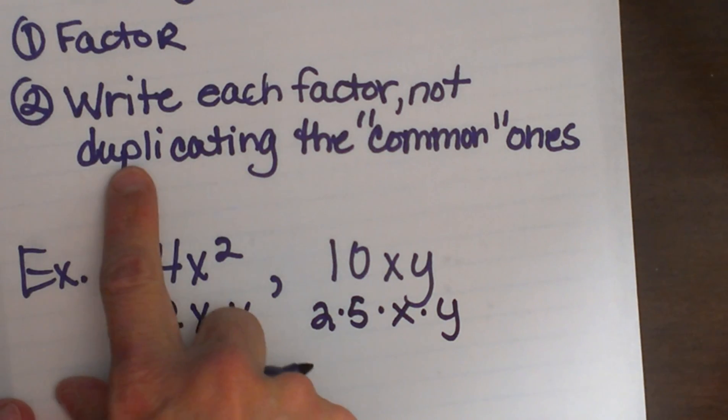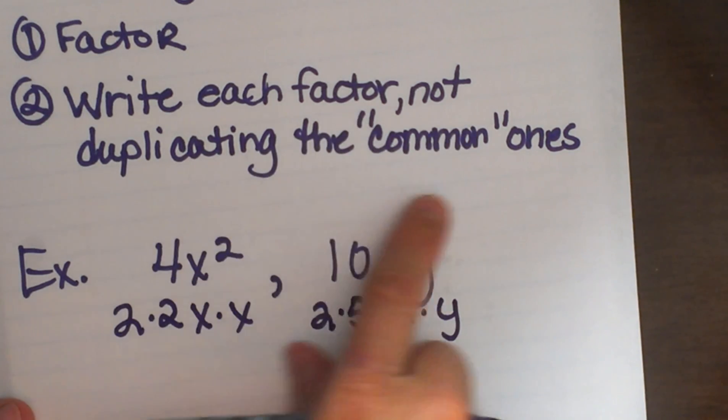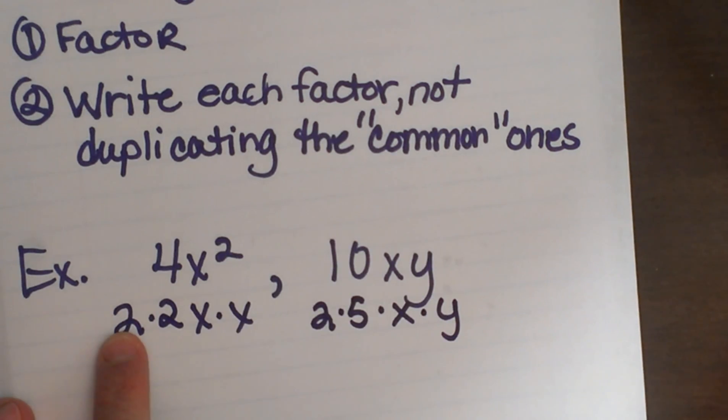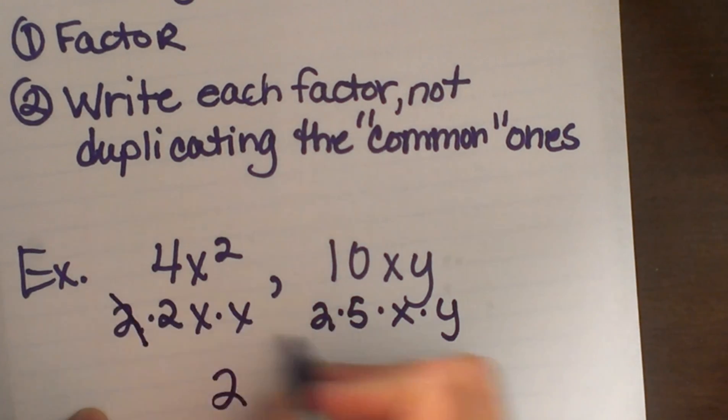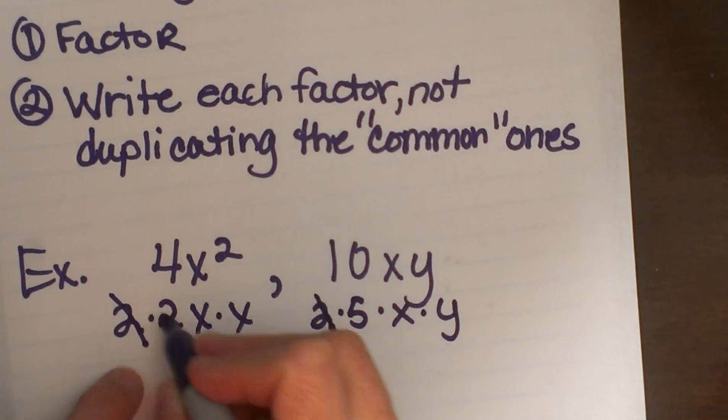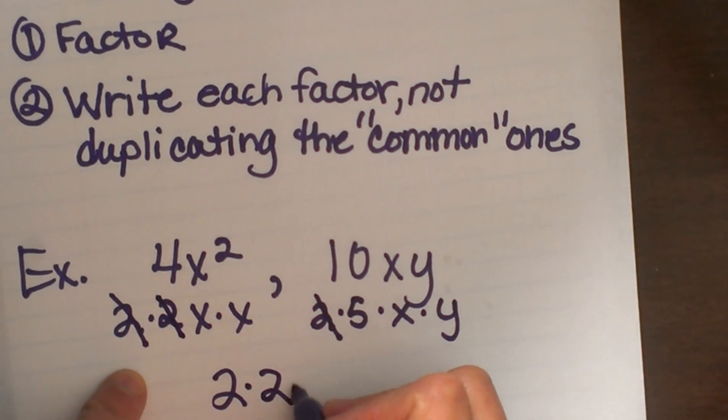Now I am going to write each factor, but I am not going to duplicate the common ones. So I have got to write the number 2 and that accounts for both of these because I do not want to duplicate that one. That means I need another 2 and it accounts for that one and a 5 to account for the 5. So my coefficient is actually going to be 2 times 2 times 5 which is 20 and you can see both 4 and 10 divide into 20 evenly.